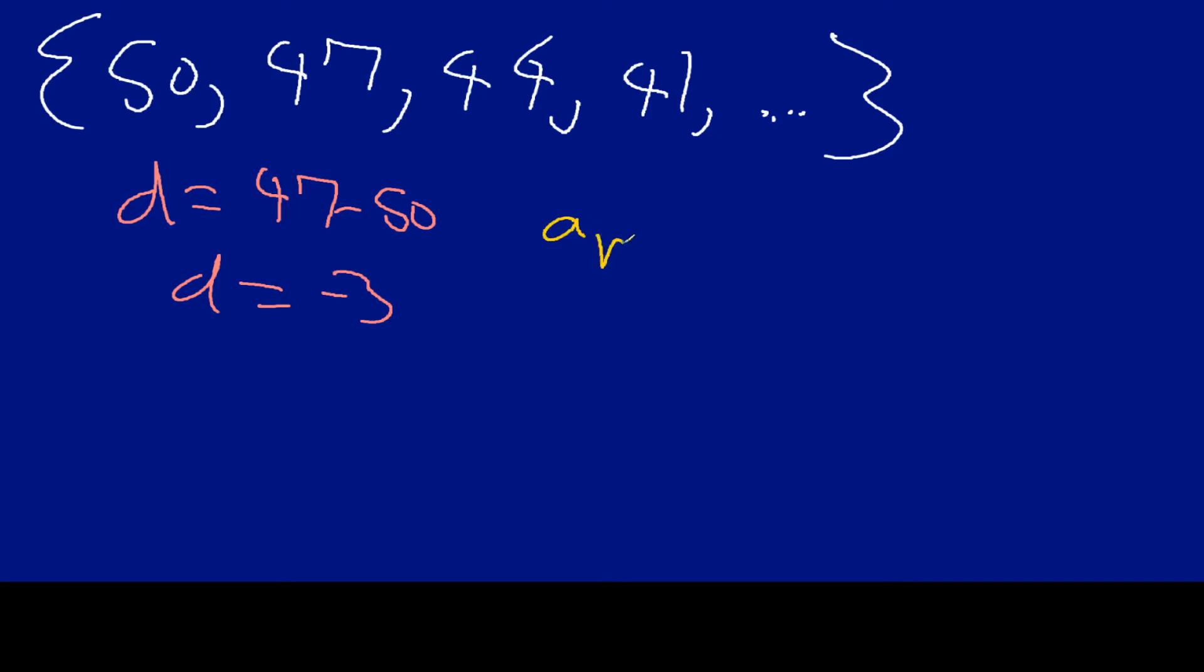So, we got a sub n. Our a1 is going to be 50. And so, this time it's going to be minus 3 times the quantity of n minus 1. Okay. So, if we solve this, we're going to get 50 minus 3n plus 3. Because negative 3 times negative 1 is going to be a positive. If I simplify this,